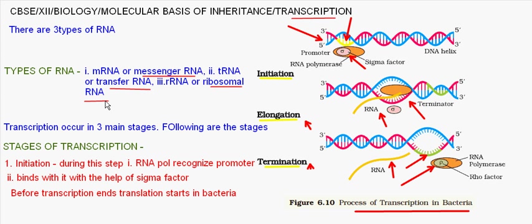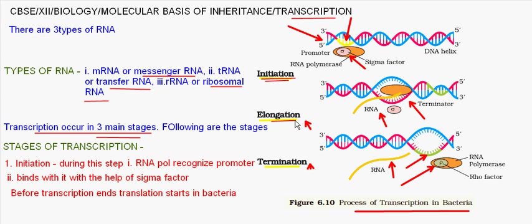The process of transcription occurs in three main stages. The first step is initiation, the second step is elongation, and the third and last step is termination. Initiation means starting something, elongation means stretching or increasing in length, and termination means the stopping of a process.